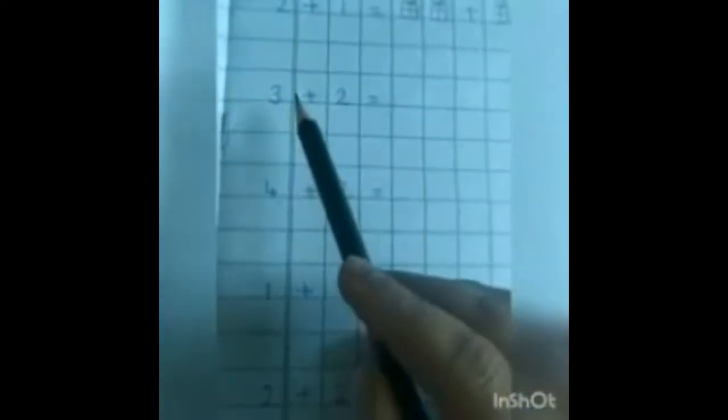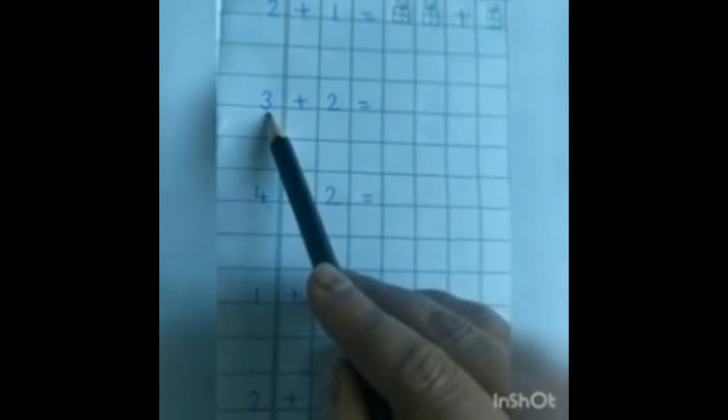Next is, this is number 3. So we will put here 3 dots. 1, 2, 3. After 3, which sign is this? Plus. After plus, which number is this? 2. So we will put here 2 dots. 1, 2. Sign of is equal to.